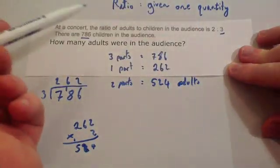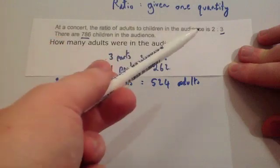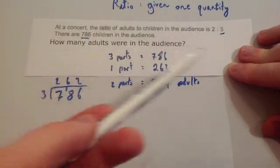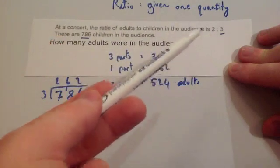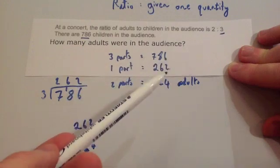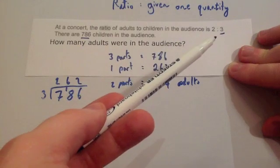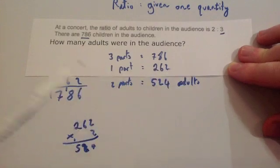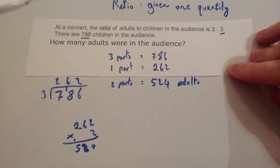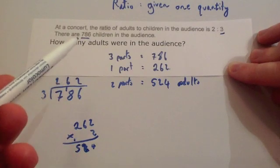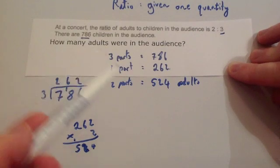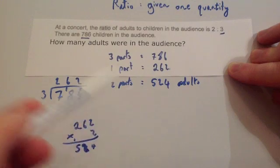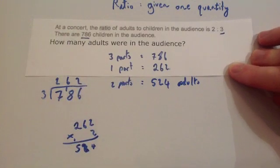The main method: whenever you're given one quantity and you know the ratio, divide the quantity by whatever number that part has in the ratio to get one part, then multiply by the other number in the ratio to find what you need. If they want to know how many people are in the audience altogether, add 786 children to 524 adults.